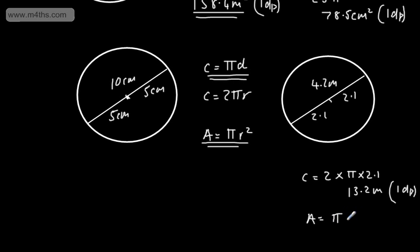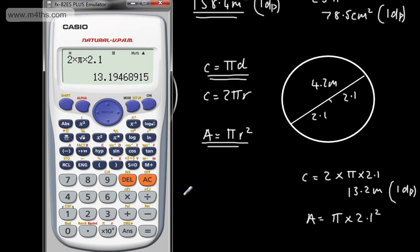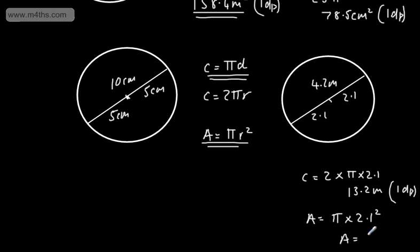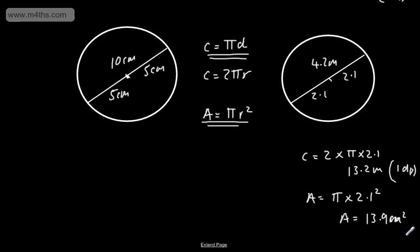For the area, we need the radius, so we use π × 2.1 squared. In the calculator, shift pi multiplied by 2.1 squared gives 13.9. So the area is 13.9 metres squared, to one decimal place.